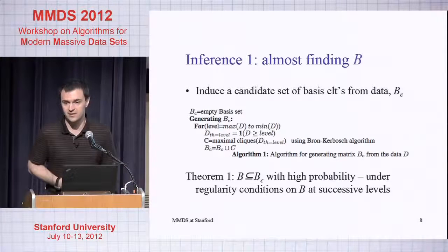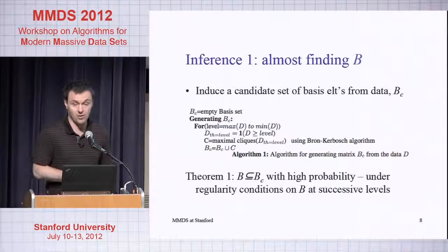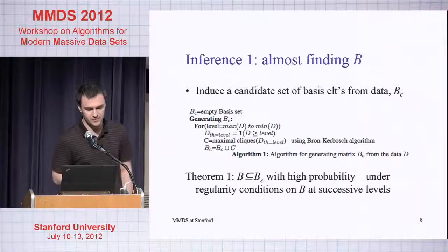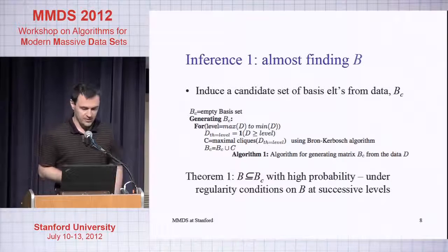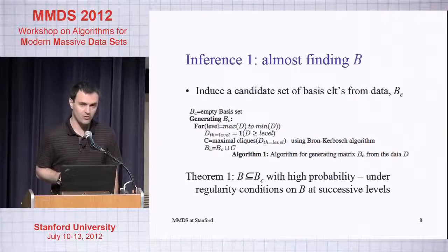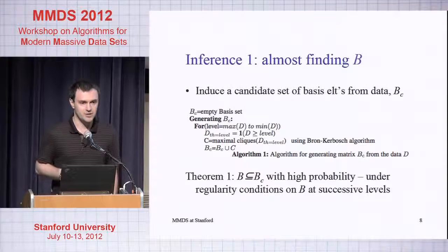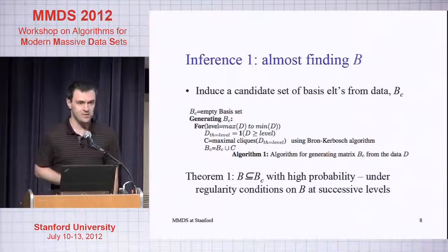Instead of doing inference in a very classical statistical fashion, for example maximum likelihood, we developed a two-stage inference procedure. The way the two stages work is that in the first stage I'm almost going to find B. In fact, I'm going to find a matrix B' that contains B.